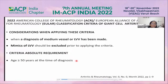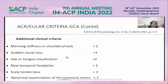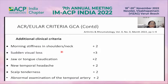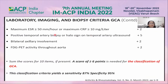The absolute criterion is age 50 years or more at diagnosis. Additional clinical criteria with assigned points include: morning stiffness in shoulders and neck, sudden visual loss, jaw or tongue claudication, new temporal headache, scalp tenderness, abnormal temporal artery examination, ESR ≥50 mm/hr, CRP ≥10 mg/L, and positive temporal artery biopsy or halo sign on temporal artery ultrasound — which carries the maximum of plus five points.